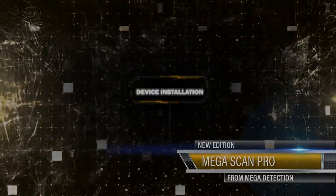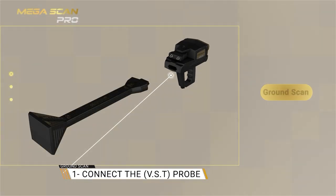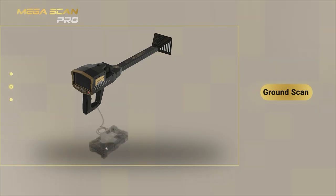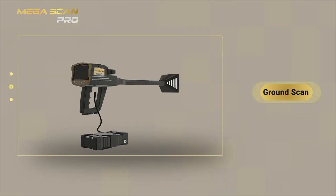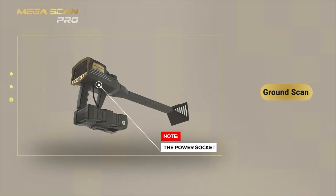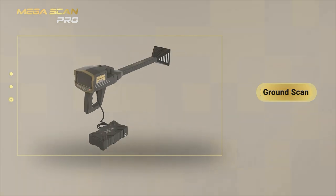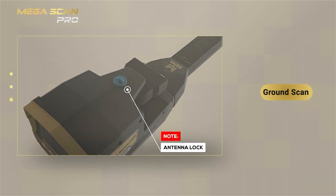Device Installation: Connect the VST probe. Use the power socket on the bottom of the main unit to connect the battery. Ensure that the antenna unit is locked and closed so that the unit is stable during use.